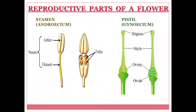Do you remember what are they? Yes, they are stamen and pistil. The stamen is divided into two parts: anther and filament. Inside the anther are present the pollen grains. The pistil is divided into three parts: stigma, style, and ovary. Inside the ovary are present the ovules. The stamen is also called andricium and the pistil is called gynecium.